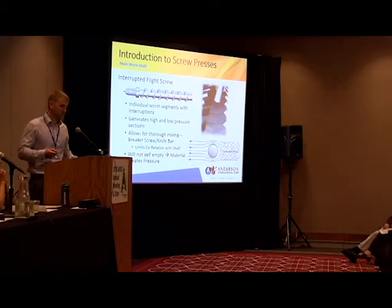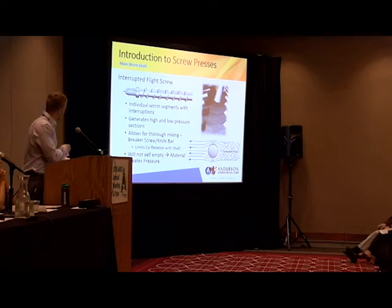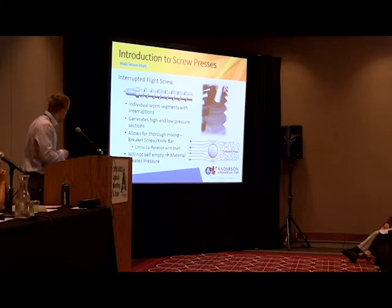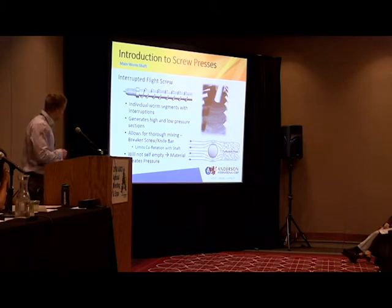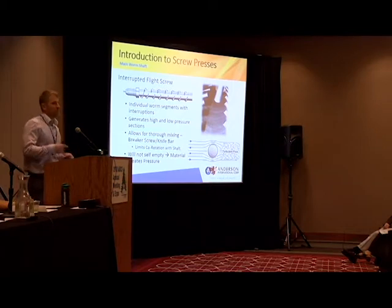The most important component of the screw press is the shaft — that determines how much work and what type of work you're doing. When Mr. Anderson first invented the shaft, he had what we'd call a continuous screw with no interruptions. What he found was he was overpressurizing his system. To solve this, he put interruptions in the shaft which acted as a pressure relief. When he built in those interruptions, another issue arose: the material would co-rotate with the shaft. So he came up with a knife bar — little perforations in the barrel — which simply limit the co-rotation of the product with the shaft.